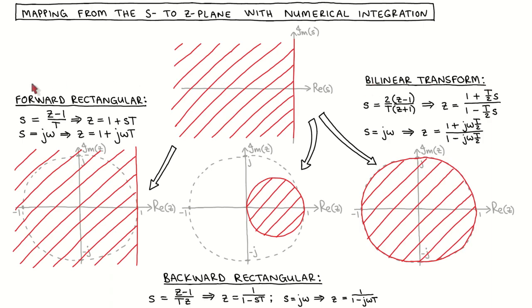When using the forward rectangular rule, we replace every occurrence of s in the transfer function of the continuous controller with z minus 1 over T, where T is the sampling period. After rearranging things, we equivalently get z equal to 1 plus sT, which defines the mapping from the s-plane to the z-plane.